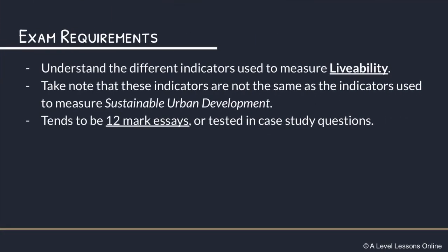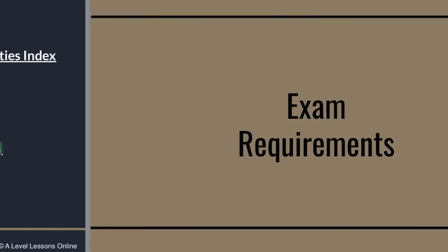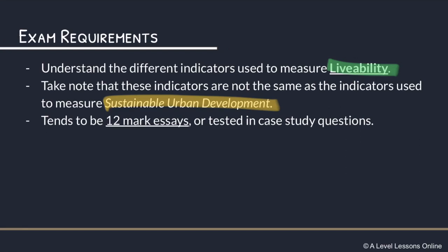For exam requirements: you first need to understand the different indicators used to measure livability. All of them cover roughly the same factors from the previous video. Take note that these are not the same as indicators used to measure Sustainable Urban Development — those are things like SDG 11 or GRI. These can appear as smaller mark essay questions or case study questions. If a question mentions data from a magazine, you should instantly know it refers to Monocle's Most Livable Cities Index. Make sure you can identify the indicators when something pops out.